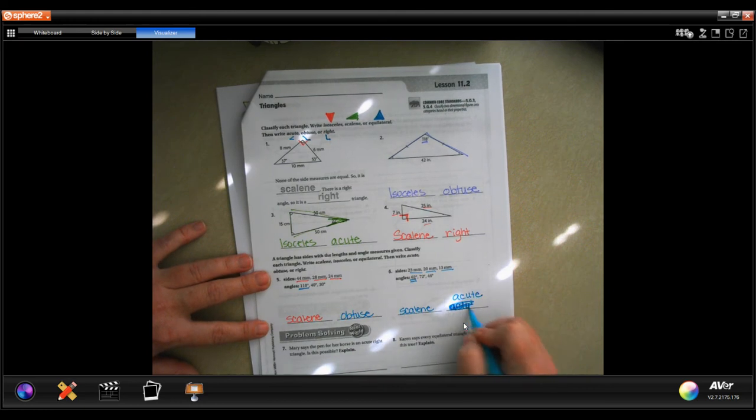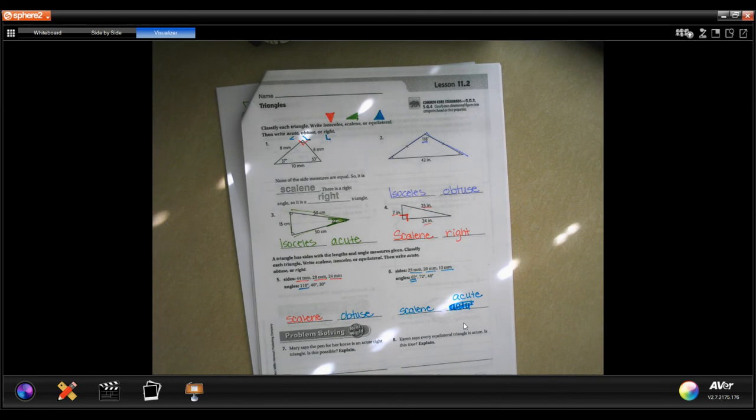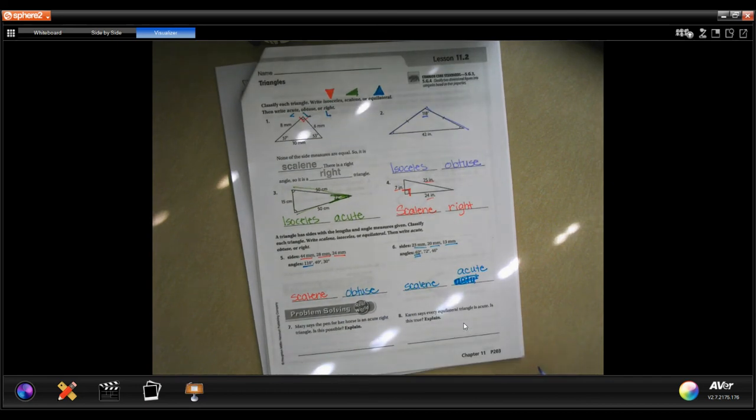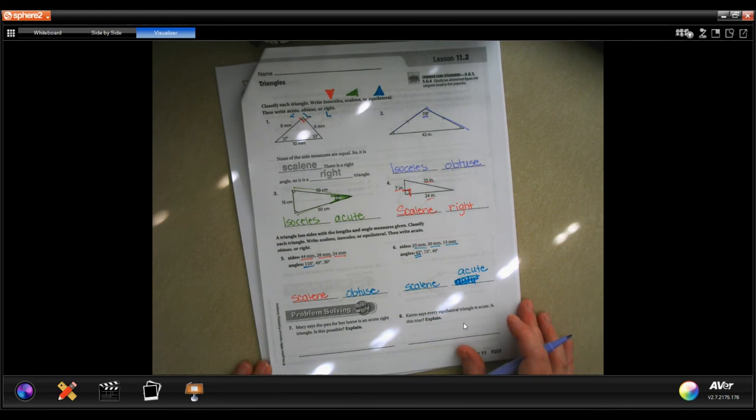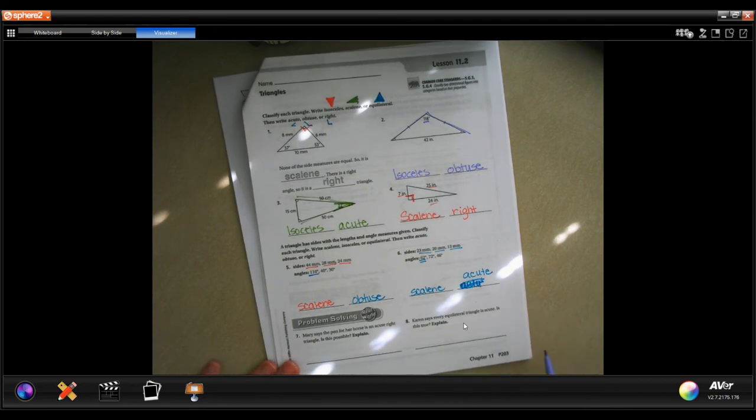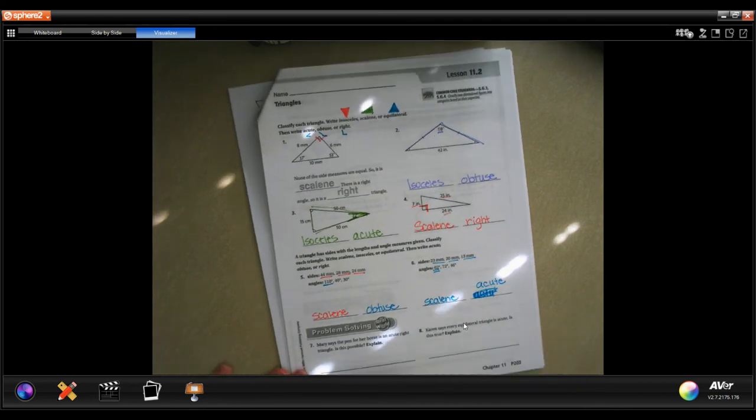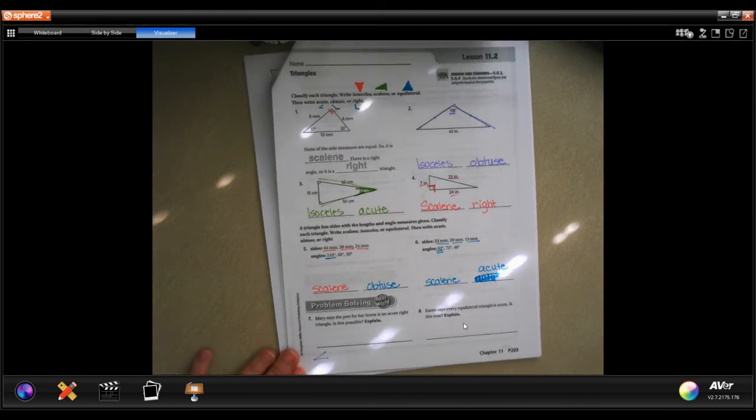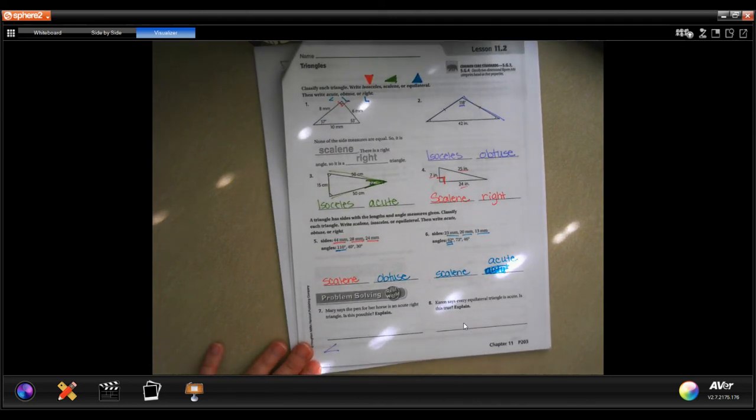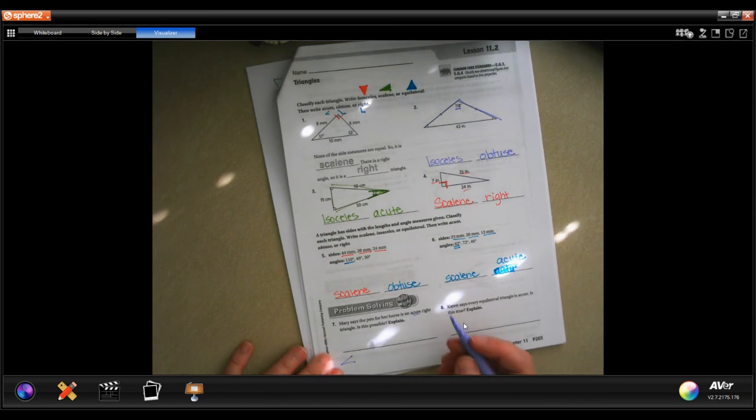Alright, we're going to go down to the bottom. It says Mary says the pen for her horse is an acute right triangle. Is that possible? Is it possible to have a triangle with an angle smaller than 90 degrees, because that's what acute means, and also have a right triangle? No, it's not. It cannot be both.